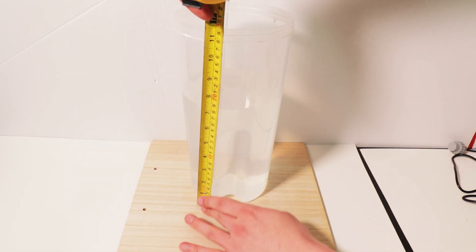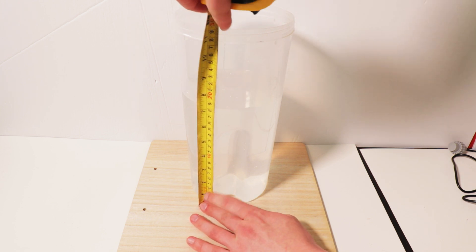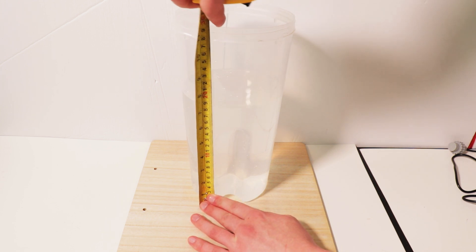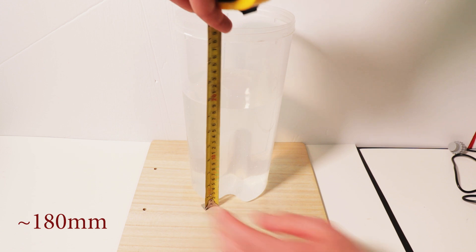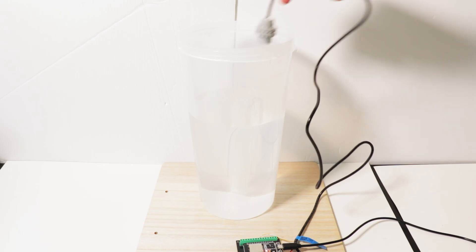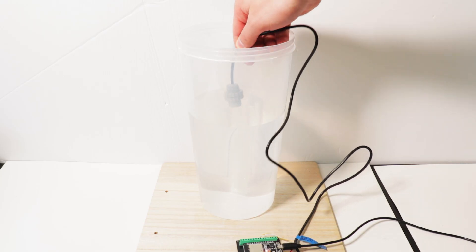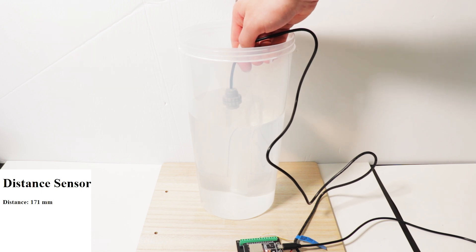To test it, I filled a container with water, and gave it a measure to see what value to compare to. Here it looks like the water line is approximately 180mm. Giving the sensor a quick dip, it turns out that it's actually functioning, and we can see that it's fairly accurate, with a value hovering around 180mm.